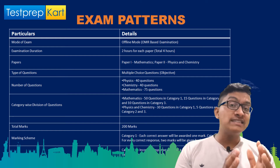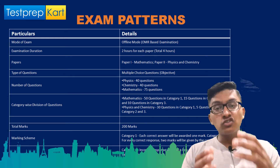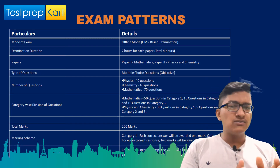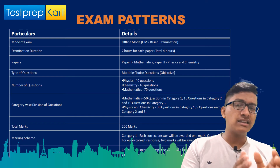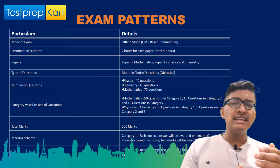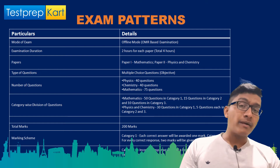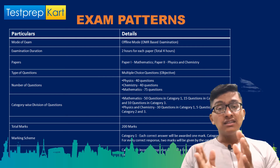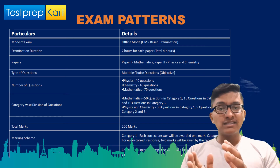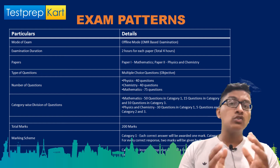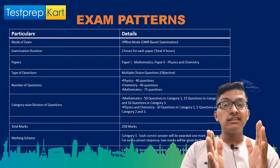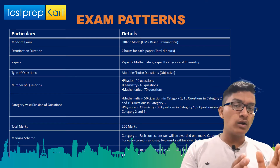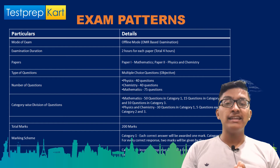The second paper is for Physics and Chemistry and consists of 80 questions total, also divided into three categories. Category 1 questions carry 1 mark with -1/3 negative marking. Category 2 carries 2 marks with -1 negative marking. Category 3 carries 2 marks with no negative marking. Both papers are 100 marks each, giving a total of 200 marks. The time limit is two hours for each paper.